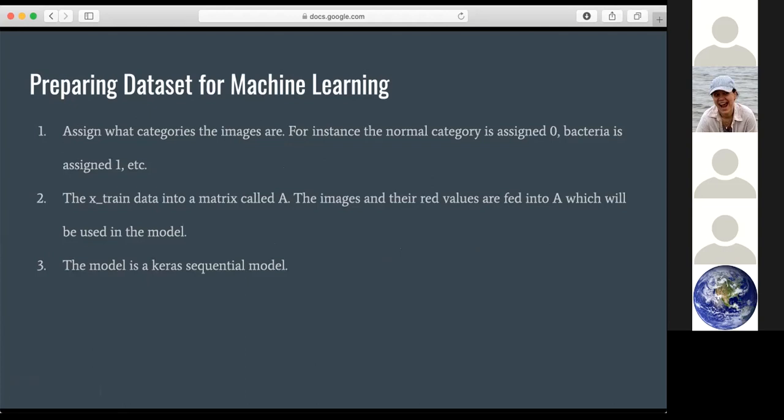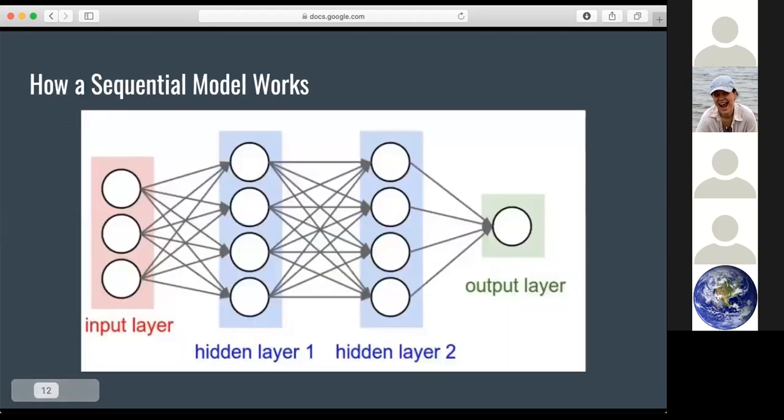I put all the image data into a matrix called A. The images and their red values were fed into A which were used in the model. And the model is a Keras sequential model. This is sort of a model of how the sequential model works. So a sequential model has a linear stack of layers. It has a single input and a single output.